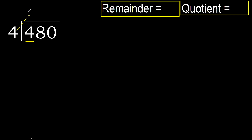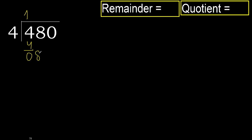4 multiplied by 2 is 8 — 8 is greater. 4 multiplied by 1 is 4, which is not greater. Subtract. Next, eliminate 0 on this side.